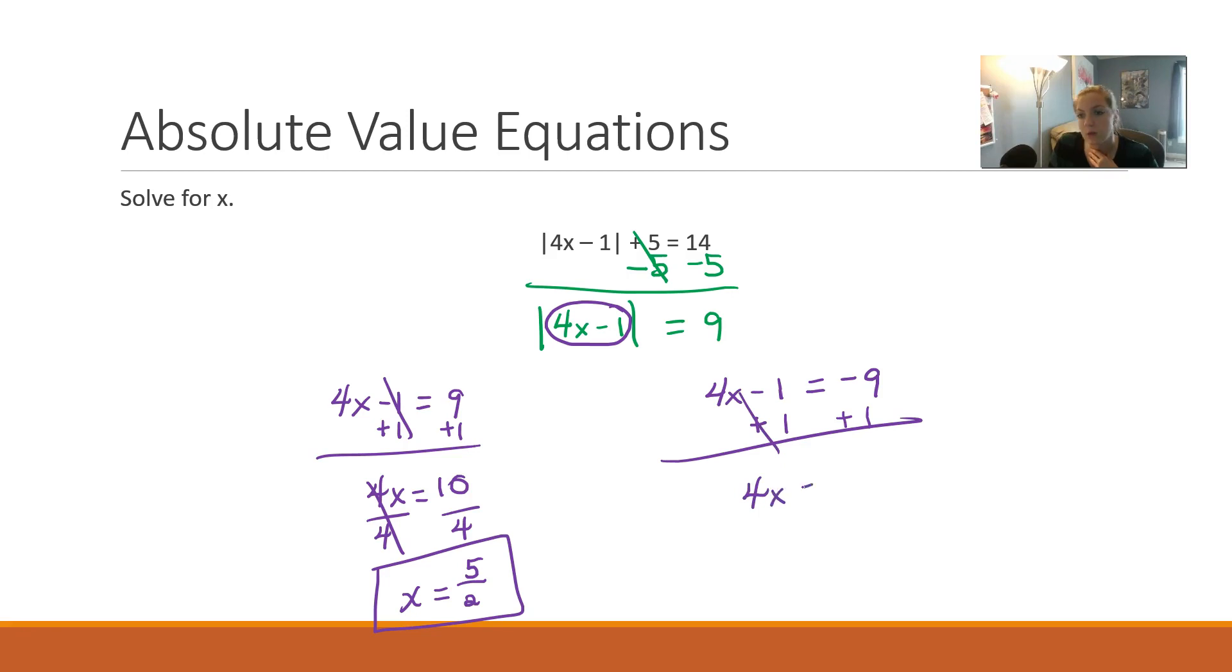Have to do the same thing to the other side. 4x equals negative 8. This will be a prettier answer. Divide both sides by 4, x equals negative 2. X could be 5 halves or x could be negative 2.